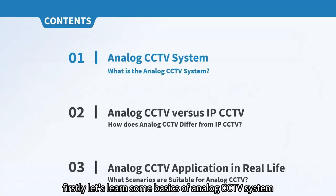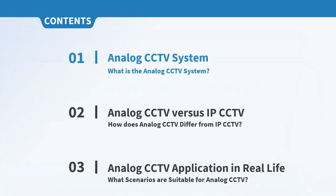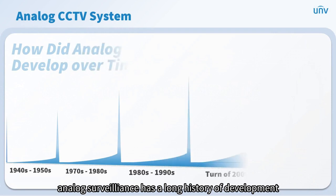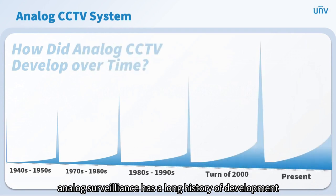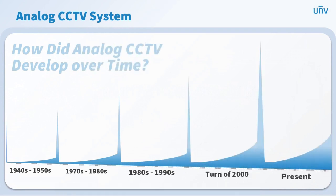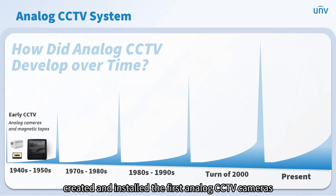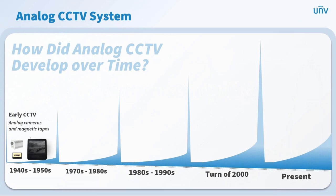Firstly, let's learn some basics of analog CCTV systems. Analog surveillance has a long history of development. It first started in the 1940s when a German engineer named Walter Brook created and installed the first analog CCTV cameras.